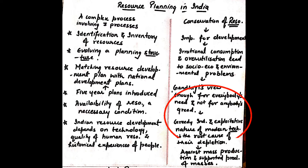Greedy individuals and the exploitative nature of modern technology is the root cause of their depletion. Gandhiji was against mass production and he supported production by the masses.